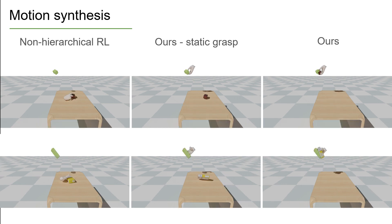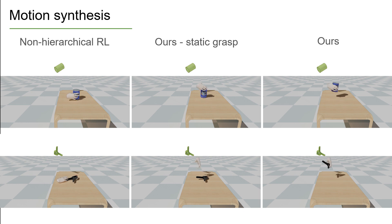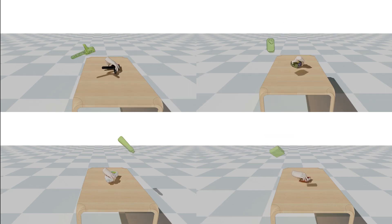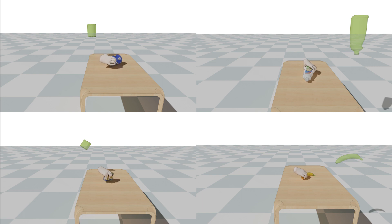In contrast, our method can maintain a stable grasp while moving the object to a 6D target pose. Here, we show that our method works across a variety of different objects. It can successfully generate sequences with different grasp references and can even learn complex grasps.